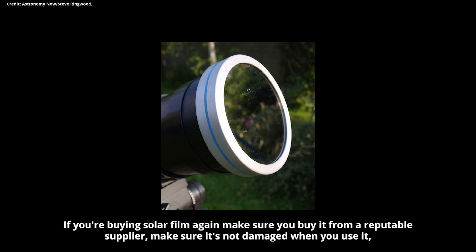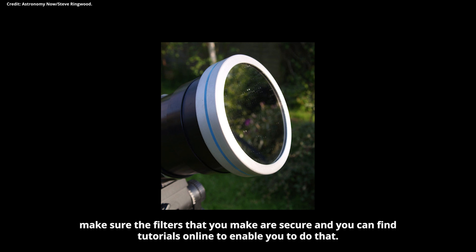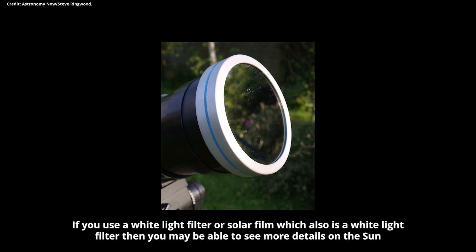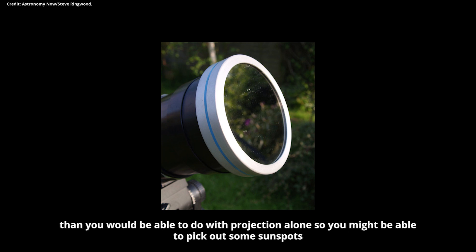If you're buying solar film, again, make sure you buy it from a reputable supplier. Make sure it's not damaged when you use it. Make sure the filters that you make are secure and you can find tutorials online to enable you to do that. If you use a white light filter or solar film which also is a white light filter, then you may be able to see more details on the sun than you would be able to do with projection alone. So you might be able to pick out some sunspots. You can see some sunspots on my image here.